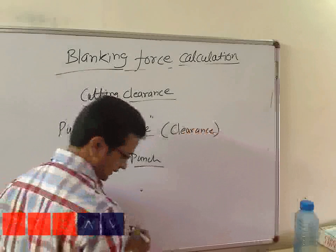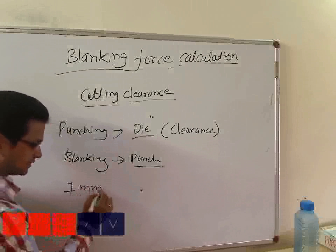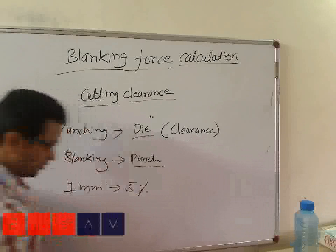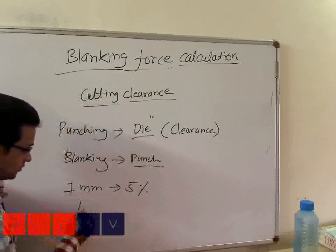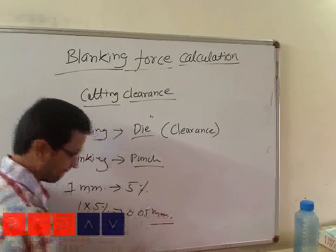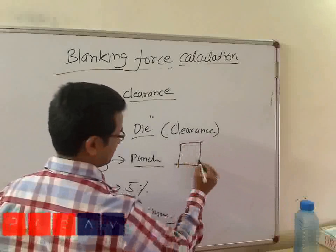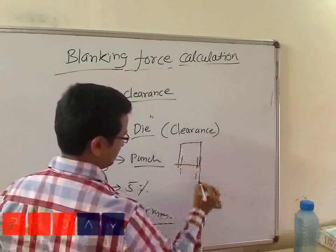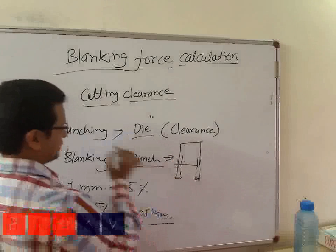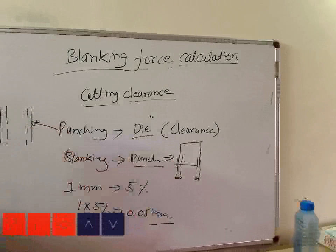So how do we calculate that clearance? Supposing it is given that 1 mm sheet thickness is there and cutting clearance is 5% — normally given in terms of percentage — we calculate 1 multiplied by 5%, which gives us 0.05 mm. That 0.05 mm has to be considered on dimensions of the punch in case of blanking operations, and on dimensions of the die in case of punching operations.